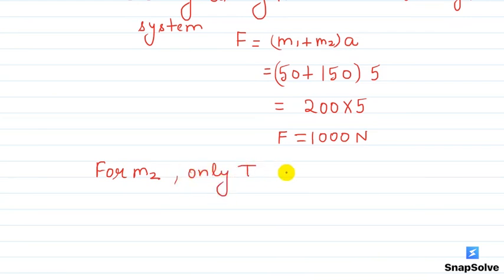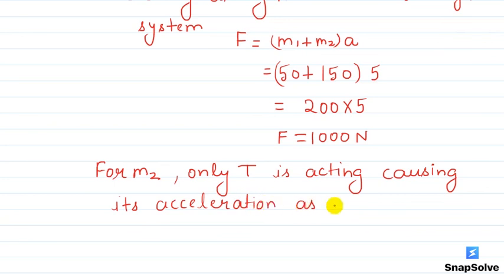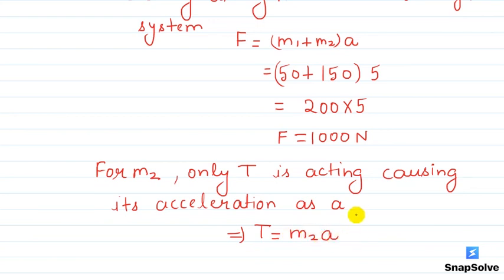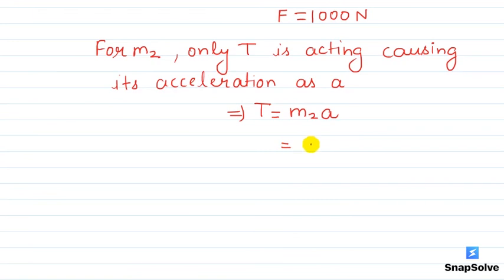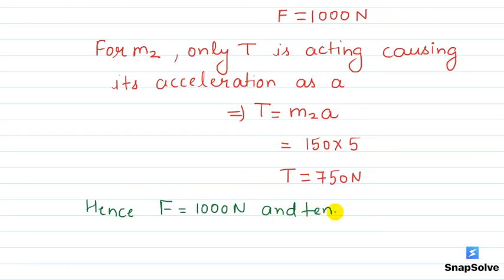For M2, only tension T is acting causing its acceleration as a. So this implies tension equals M2 into a. We can see that M2 is 150, acceleration is 5, so tension is 750 newton.